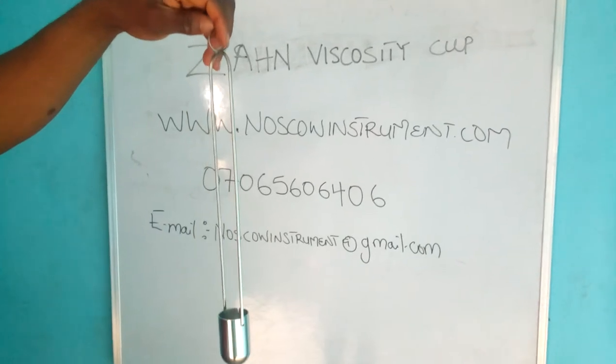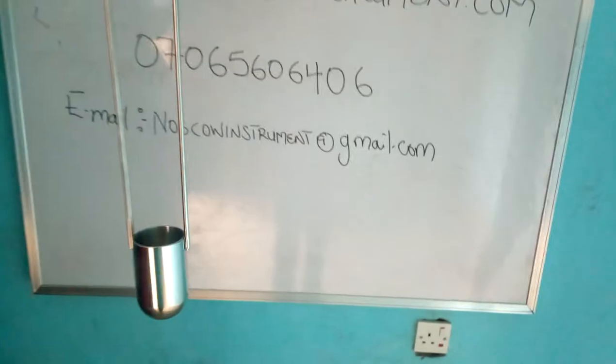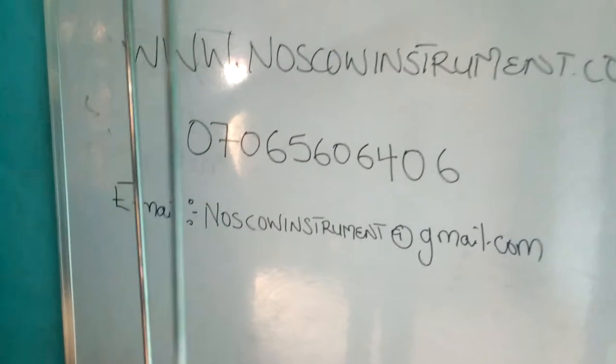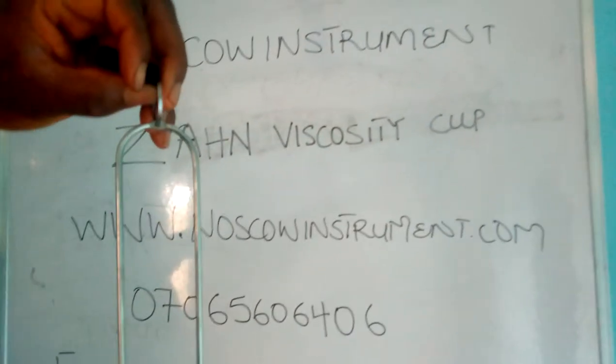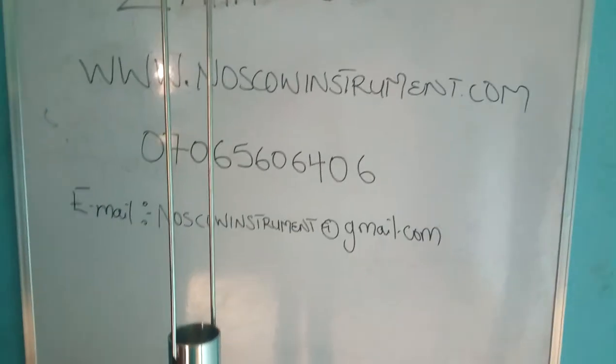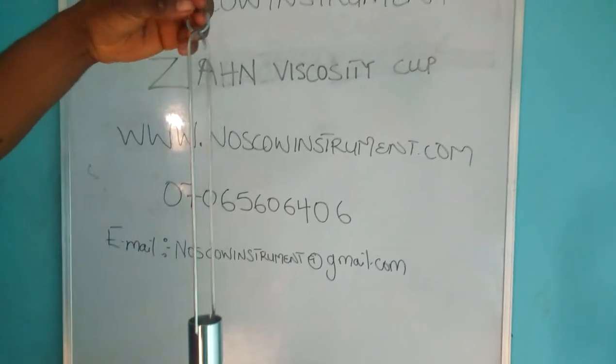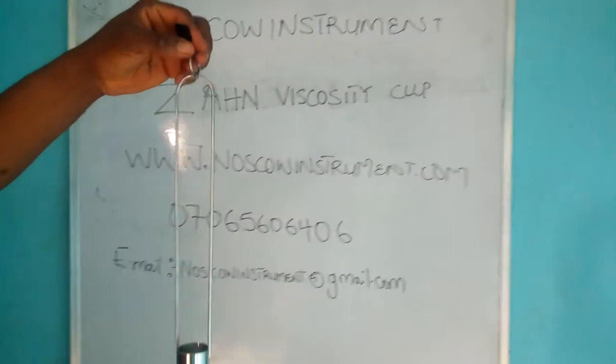The Zahn Viscosity Cup is used to measure the viscosity of a liquid. Viscosity of liquid is measured if you stop using a Viscometer — a Digital Viscometer — then you can also use the Zahn Viscosity Cup.